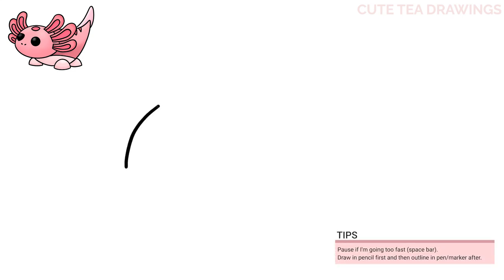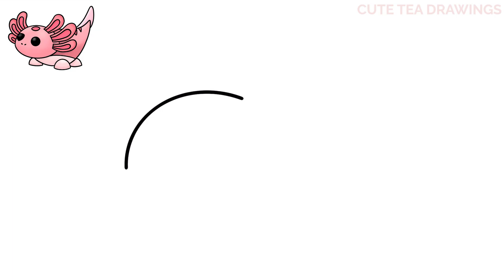Let's start by drawing the top of the head with a curved line. Stop here so we can leave room to draw the gills. Let's draw the eyes next. Draw a curve on the left here, then a U-shape to close off this eye.